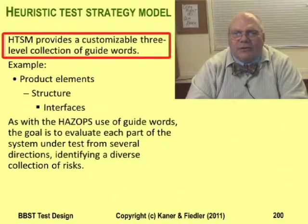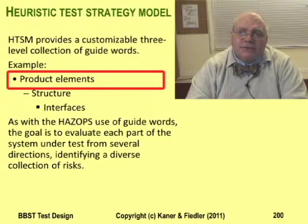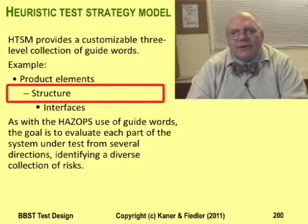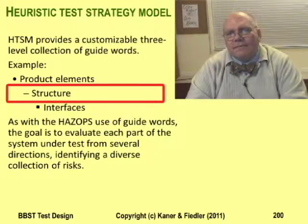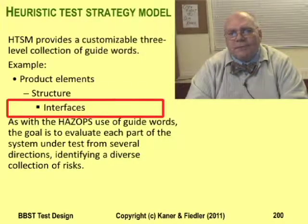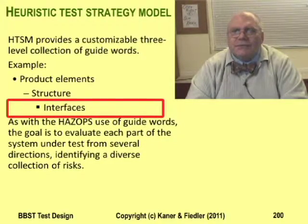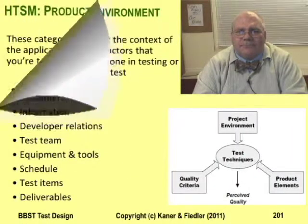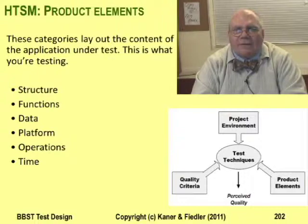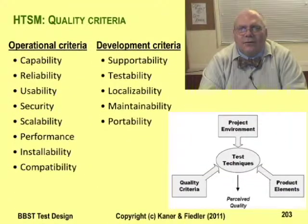Bach's lists are more detailed than a traditional HAZOP list. His lists are structured in three tiers. The top level is the type of list — for example, product elements. The next level is the type of element. For example, the product elements list includes structures, and structures refers to everything that's part of the physical product. The specific parts of the physical product are subclasses of structures, like code, interfaces, and non-executable files. Here are the classes within the project environment, here are the classes of product elements, and here are the quality criteria.